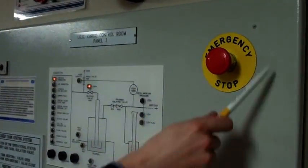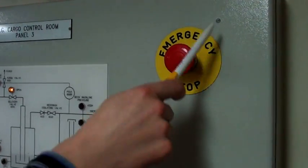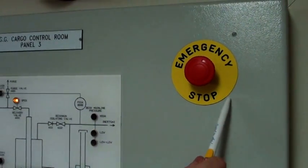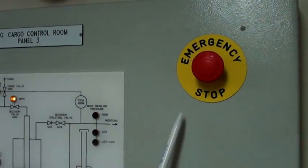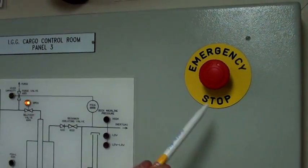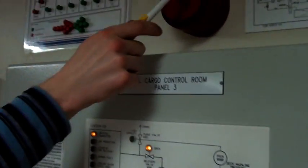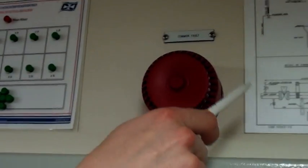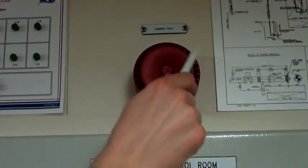On the right side, top side of the panel, you have an emergency stop button which stops the inert gas supply on deck. You also have the alarm unit or the buzzer.